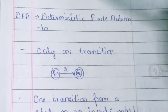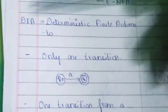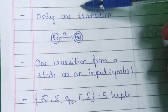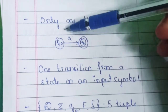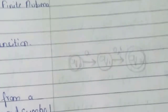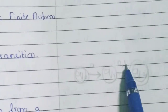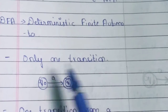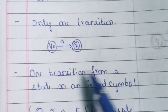DFA stands for Deterministic Finite Automata. It is defined by three key points. The first is that only one transition takes place — from one state to another, only one input symbol is used. In previous examples, there may have been chances of using two or more input symbols, but in DFA it is mandatory to use exactly one input symbol for one transition from one state to another.